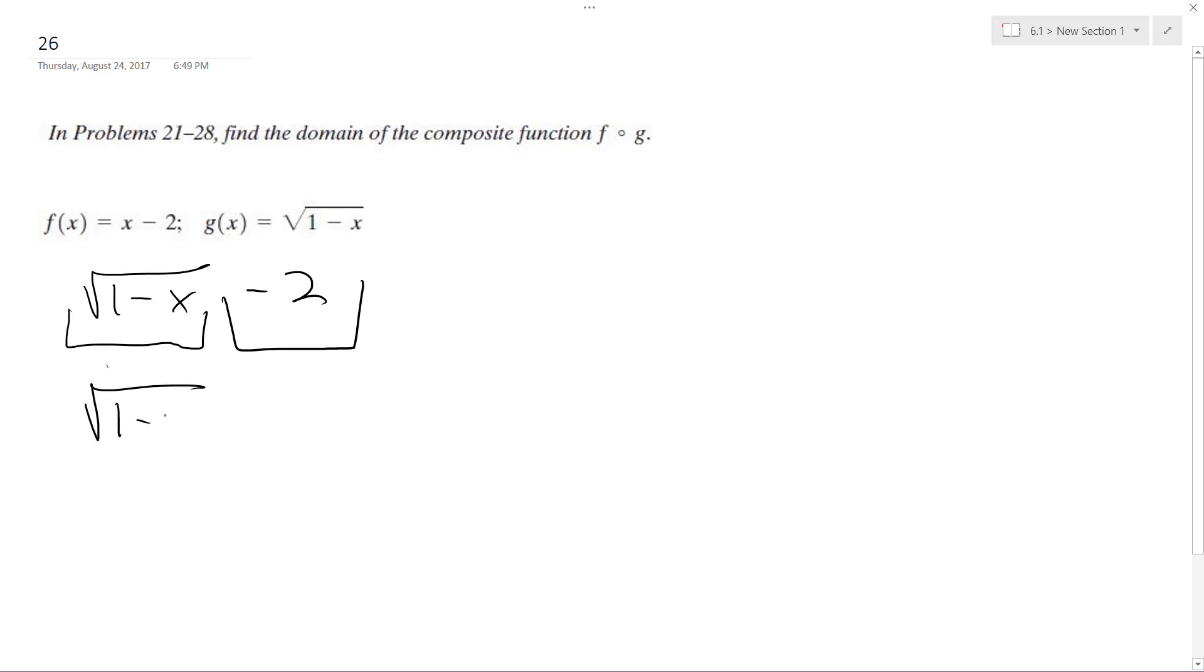So the square root of 1 minus x has to be greater than or equal to... what's inside of it has to be greater than or equal to 0. So 1 minus x has to be greater than or equal to 0.